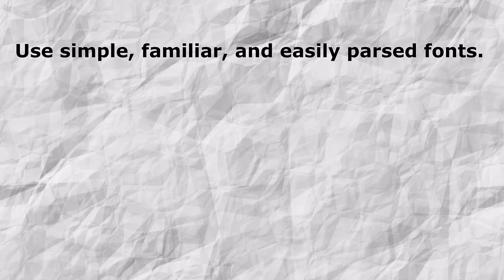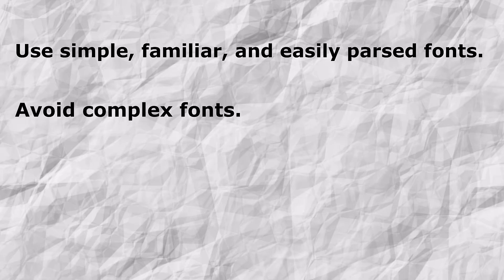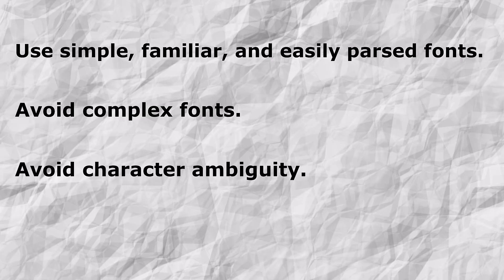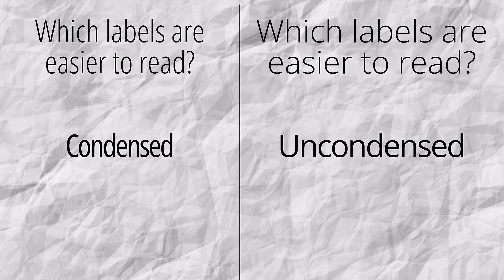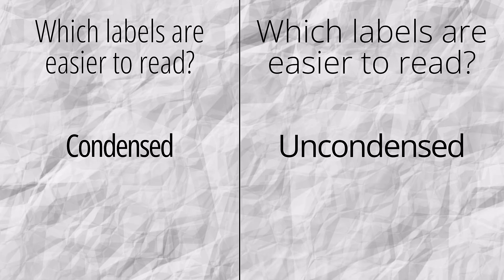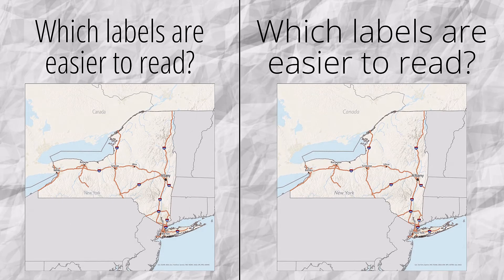Use simple, familiar, and easily parsed fonts. Avoid complex fonts such as handwriting fonts or fonts with additional strokes that are unnecessary to the main letter form. Avoid character ambiguity — when characters within a typeface appear similar to one another this can introduce ambiguity which must be processed by the brain, thus impacting reading speed and understanding. I don't recommend using condensed fonts in maps. These may fit better in a space especially for labels, but they're difficult for many people to read, as the letter forms are changed and there's not enough spacing, which can introduce ambiguity and cause difficulty for people with low vision or dyslexia.